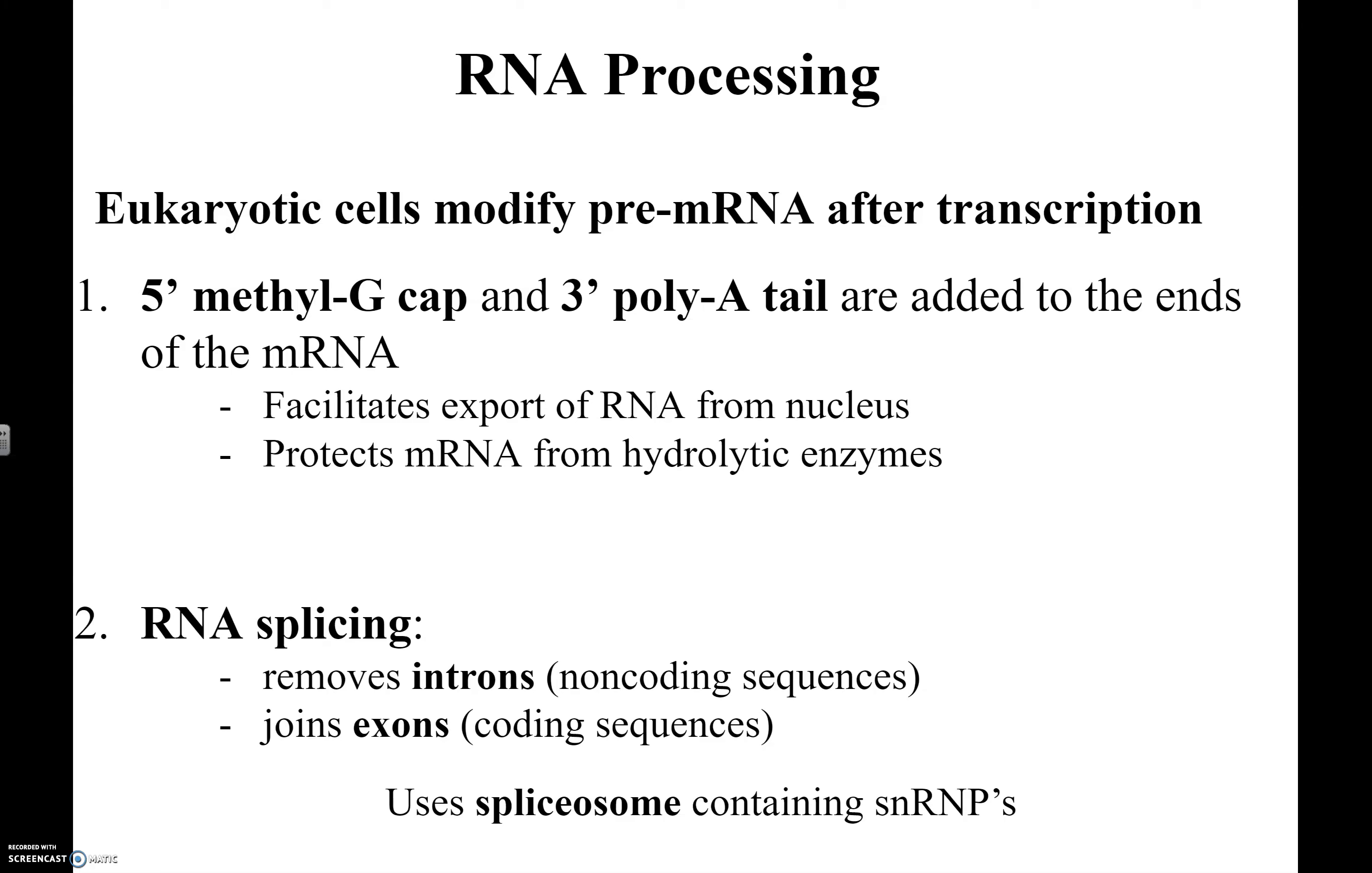First is the addition of two components. The first is called a 5' methyl-G cap, and it's a special guanine nucleotide that is added to the 5' end of our pre-mRNA. In addition to that, a 3' poly-A tail is added to the 3' end. Poly-A tail just means that a bunch of adenine nucleotides are added to the 3' end, and there are a few functions of these components, the cap and the tail.